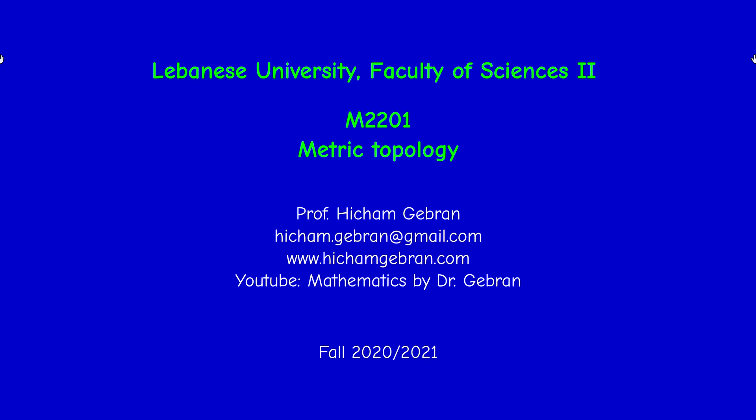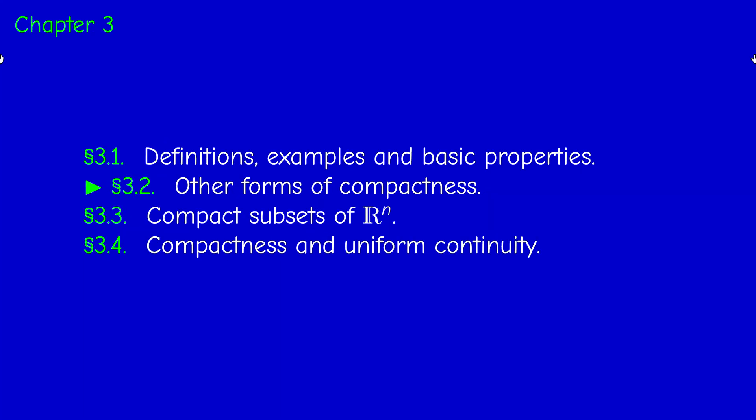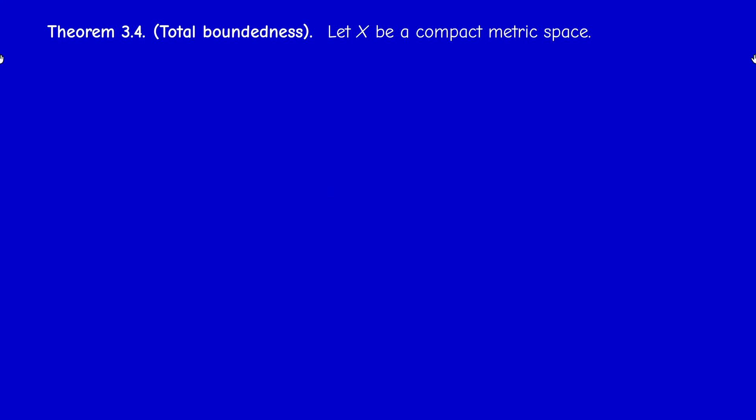Welcome back. In this video we continue our study of chapter 3 and move to section 3.2. Note that I changed the organization of the chapter slightly and added a fourth section: other forms of compactness. Let us study some properties related to compactness. The first property is what we call total boundedness.